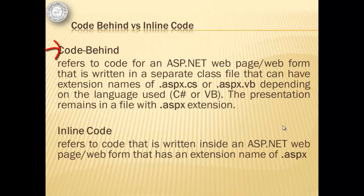Code Behind refers to code for an ASP.NET webpage or web form that is written in a separate class file that can have extension names of .aspx.cs or .aspx.vb depending on the language used. The presentation remains in a file with .aspx extension. This means that if we use Code Behind, we're going to come up with two files.